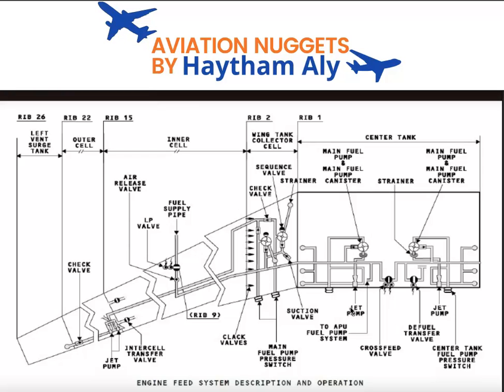By mixing the water throughout the fuel, the percentage of water reaching the engine is kept very low, preventing engine flame out. Water is always present in fuel, but the good practice is to keep it mixed throughout so no concentrated water reaches the engine. The jet pump mixes the water from the lowest point with all the fuel inside the tank and supplies fuel to the center tank pump.